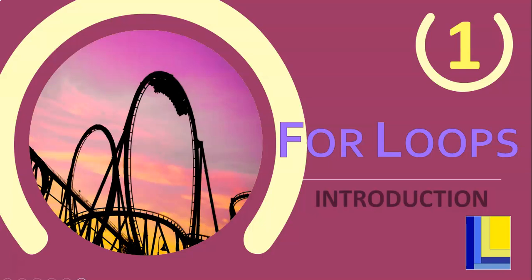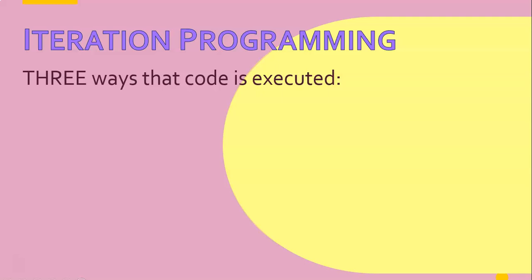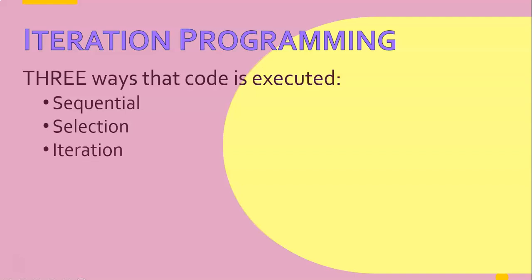This is part one of our for loop series and it's going to be an introduction into for loops and how we can use for loops in a program. We're going to talk about iteration first. We've learned that code is executed in multiple ways - we've learned about sequential programming, we did a series on selection, and now we're learning about iteration.